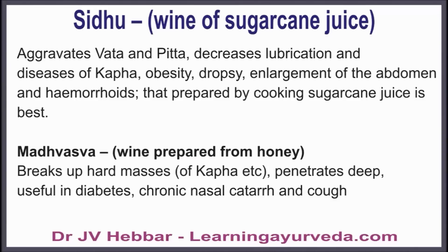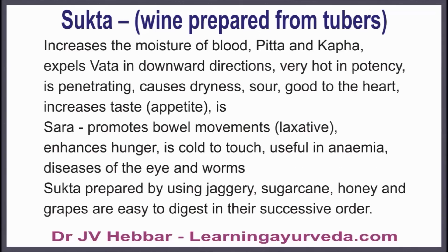Madhavasava or wine prepared from honey breaks up hard masses, penetrates deep, and is useful in diabetes, rhinitis, and cough. Shukta or wine prepared from tubers increases moisture of blood, pitta and kapha, expels vata downward, is very hot in nature, penetrating, causes dryness, is sour, good to the heart, increases taste, promotes bowel movements, enhances hunger, is cold to touch, cures anemia, diseases of the eye, and worms. Shukta prepared using jaggery, sugarcane, honey, and grapes are easily digestible in their successive order, with grape-based Shukta being the easiest to digest.